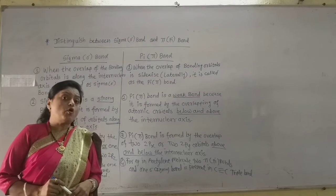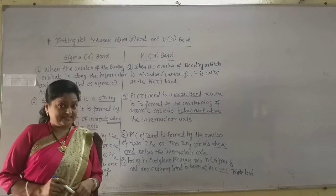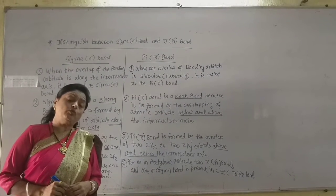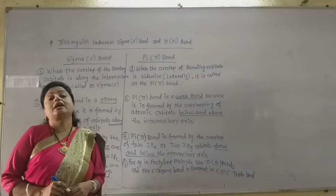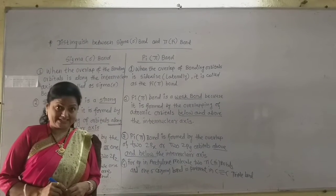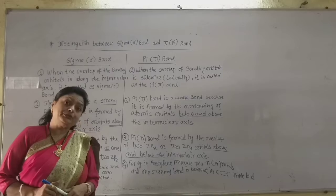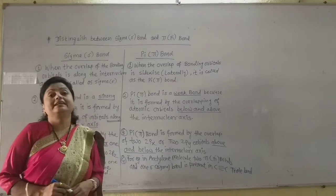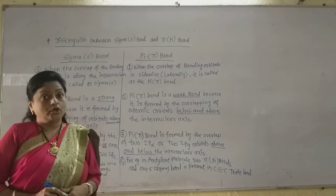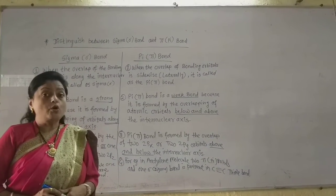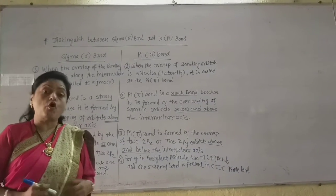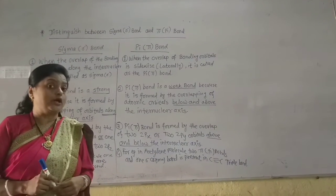Now in multiple bonds, such as in the acetylene molecule, there are carbon-carbon triple bonds. In the ethylene molecule, there is a carbon-carbon double bond. Now, how are multiple bonds formed and what are they called?